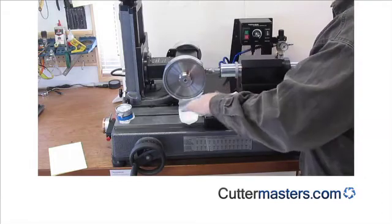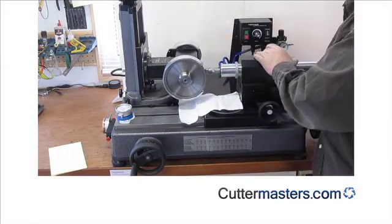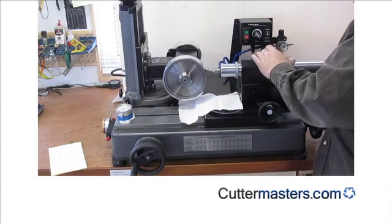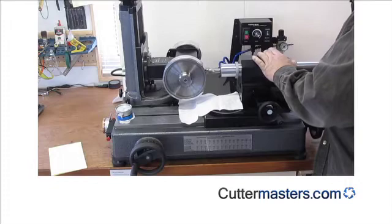By putting a cloth underneath, you can see it keeps your machine clean and also you can see the grind. So there I've just picked up this grind. I'm going to go to the next flute. This is the secondary.